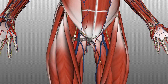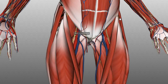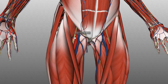A way of remembering the contents of the femoral triangle is the mnemonic NAVY — N-A-V-Y: Nerve, Artery, Vein, Y-fronts. So nerve, artery, vein from lateral to medial.